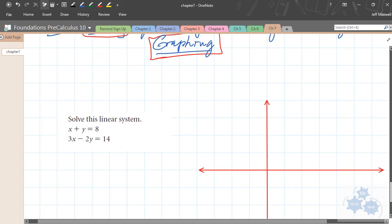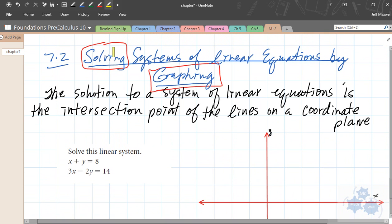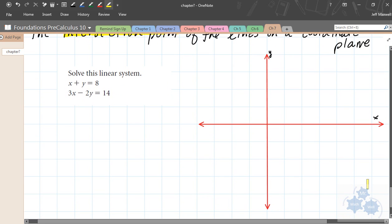This is solving by graphing. The solution to a system of linear equations is the intersection point when the lines are graphed on a coordinate plane. Today we're going to solve by graphing. As we move through this chapter, we're going to solve by different methods. Today's method is graphing. Graphing manually, what we need to do is graph each line. One of the easiest things to do is to graph the intercepts.